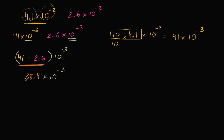But this is no longer in scientific notation. In order to be in scientific notation, this number has to be greater than or equal to 1 and less than 10. So what we could do is divide 38.4 by 10 and then multiply by 10.